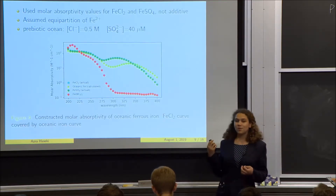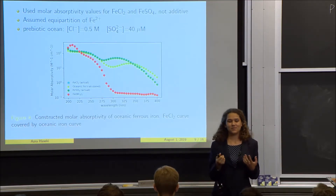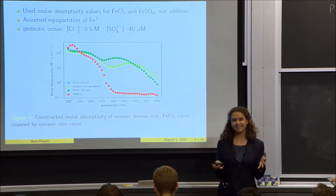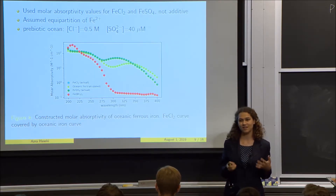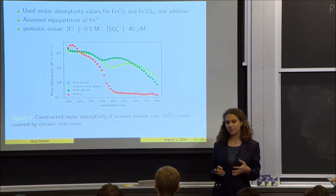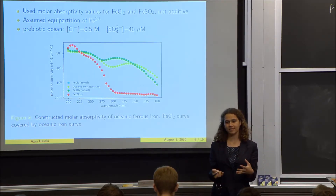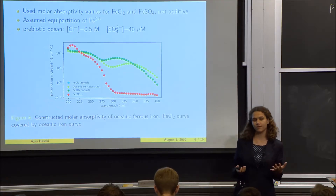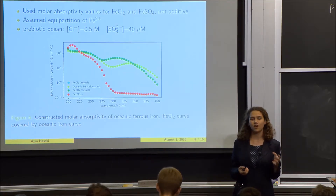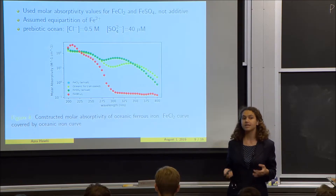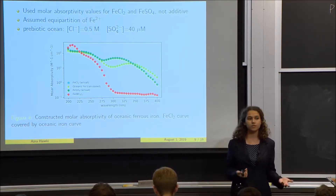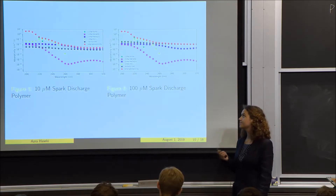Having established that, we modeled the total UV absorbance of iron in the ocean. We assumed iron would be present in its compound forms according to the relevant concentrations of chloride and sulfate. Since there was far more chloride than sulfate, iron chloride was the dominant factor.